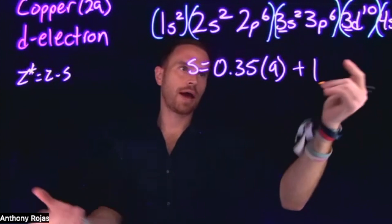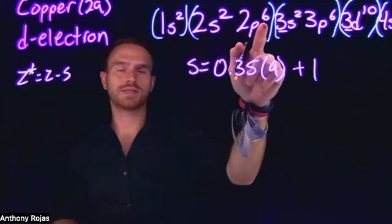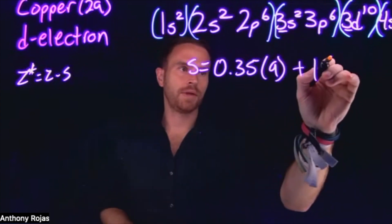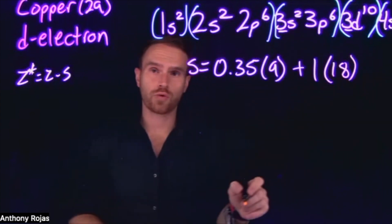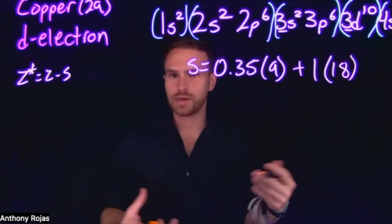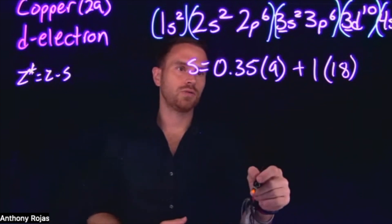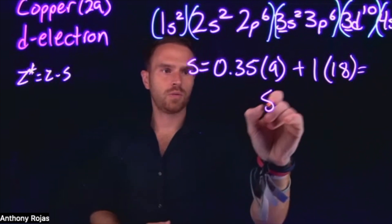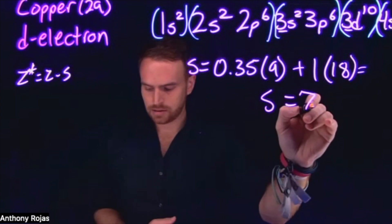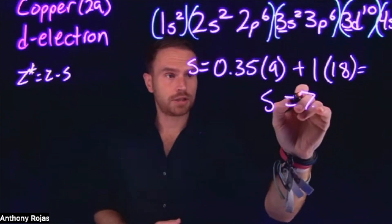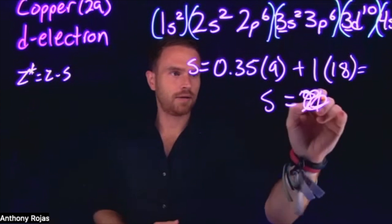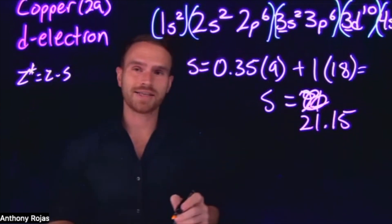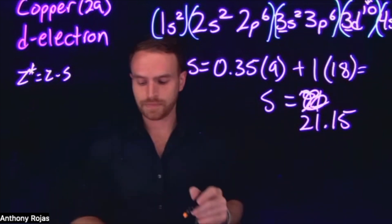We need to count all lower-group electrons: there are 2 in 1s, plus 4+6=10 in the n=2 shell (2s² and 2p⁶), plus 2+6=8 in 3s² and 3p⁶, giving 18 electrons in lower groups, each contributing 1.00. Adding that to the nine same-group d electrons at 0.35 each: 9 × 0.35 = 3.15, plus 18 × 1.00 = 18, gives us an S value of 21.15 for a single 3d electron.